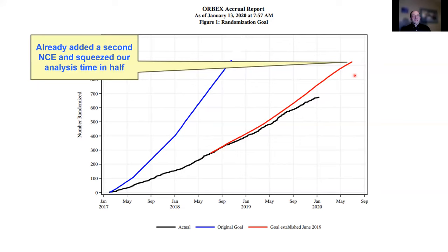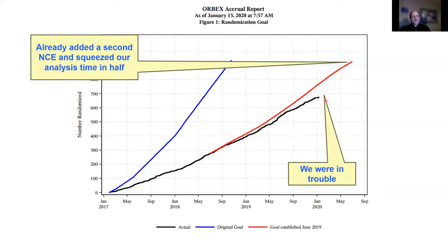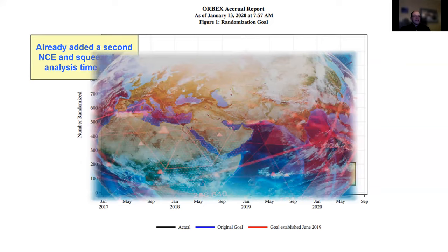You can see that at this point we had already added a second no-cost extension and squeezed our analysis time in half. We already knew the one no-cost extension wasn't going to do it — we were going to need two. All our planning for a six-year shadow budget went out the window. We were going to need more than that, and looking at the projection, we were heading well into a third no-cost extension — which put us in really big trouble because there's no fourth.